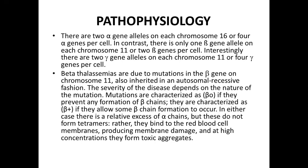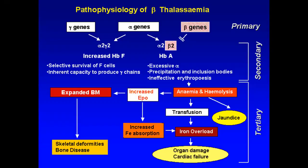At high concentration, the excessive alpha chains form toxic aggregates. These alpha chains — in the case of beta gene deficiency — don't form tetramers; they instead form toxic aggregates that precipitate onto the membrane, cause membrane damage, and result in hemolysis. This is the pathophysiology.